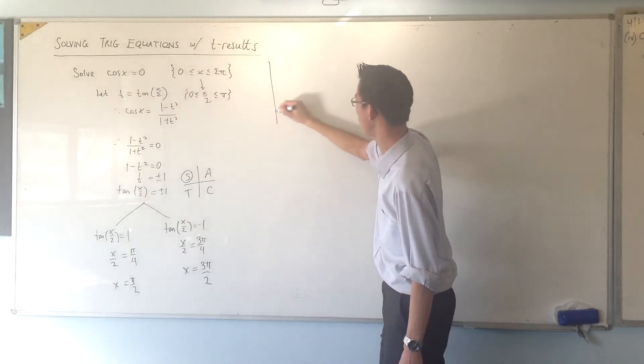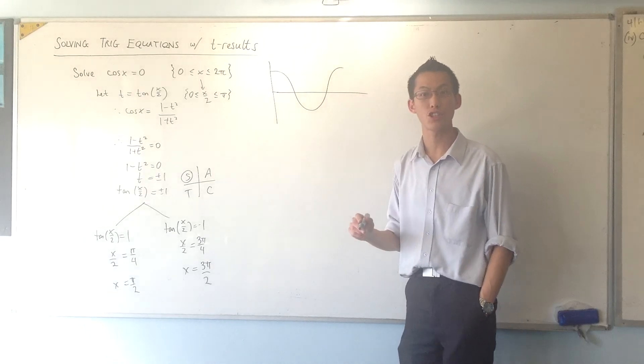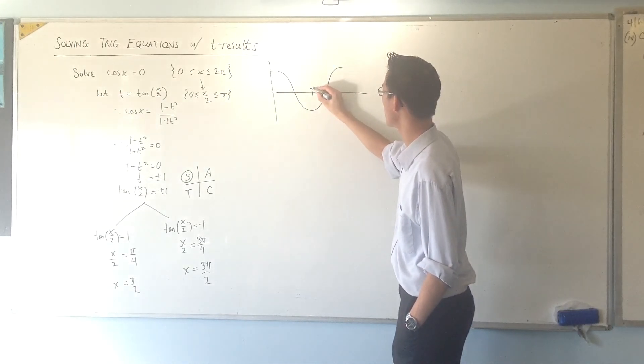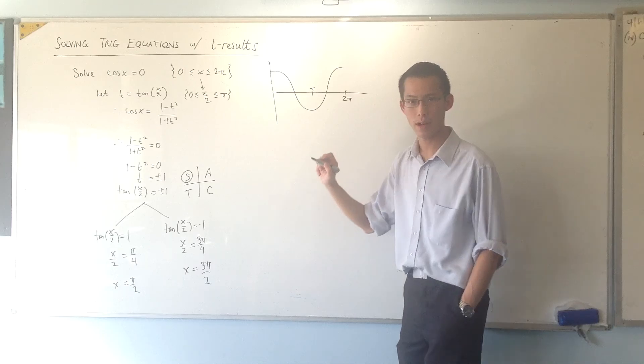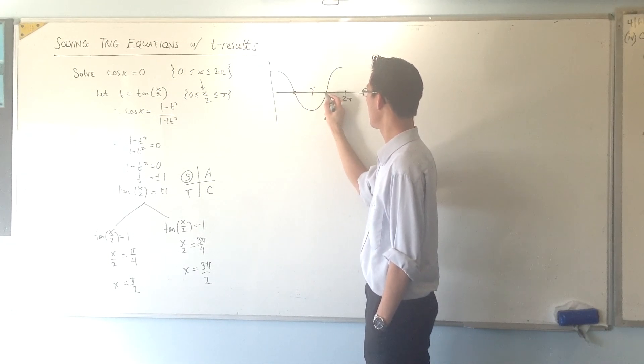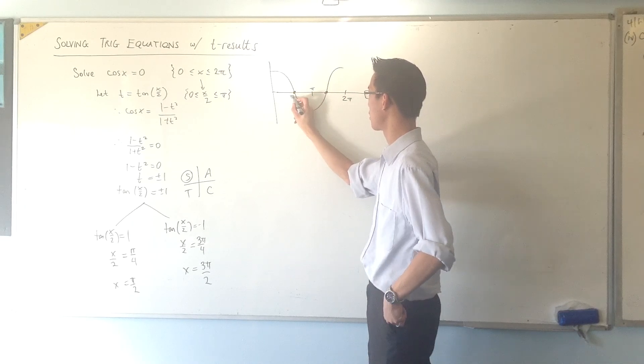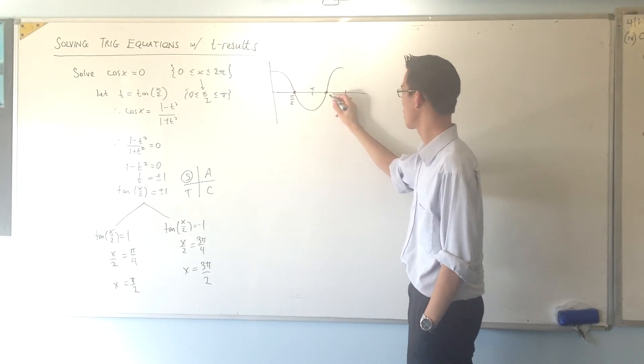Pretty simple. I would graph it. Cos x in this domain looks like so. And there's your midpoint at pi. It ends at 2 pi. So, cos is equal to 0. I'm looking for these intercepts here. And just by the symmetry of it, you can see that's pi on 2. And in the same way. 3 pi on 2.